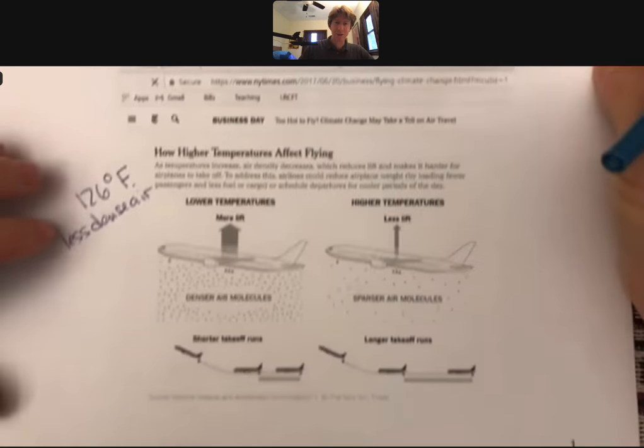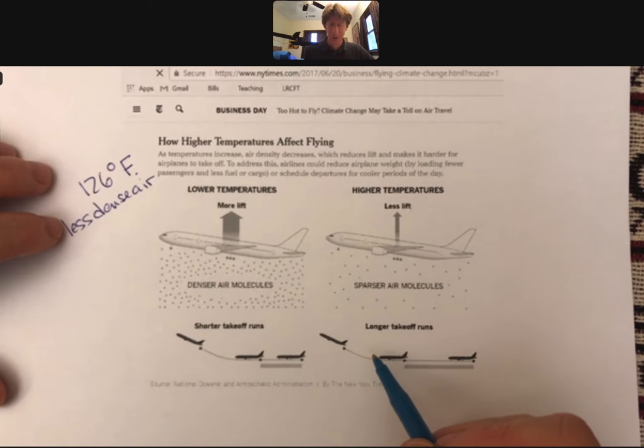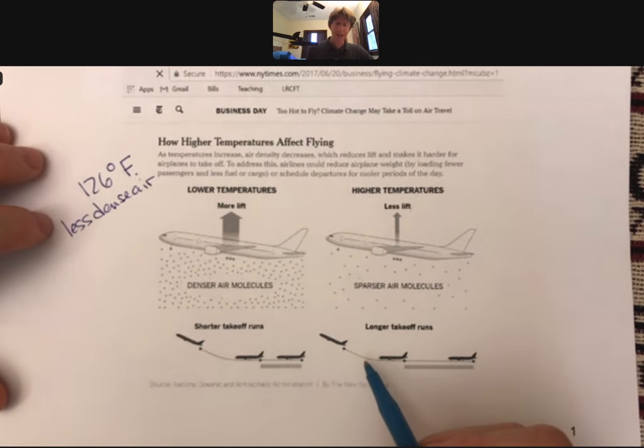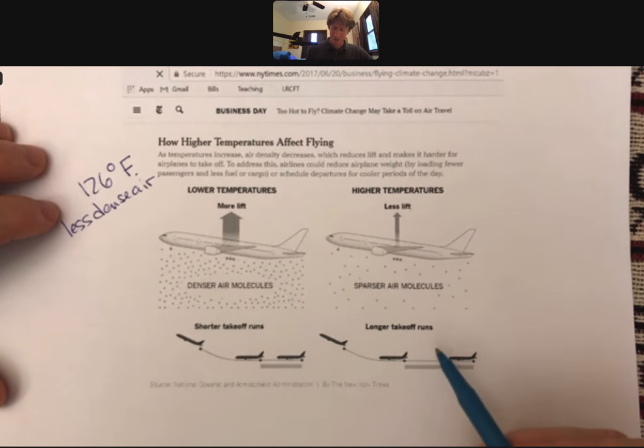And that leads to longer takeoff runs. So you need to get more speed up to get the plane off the ground. And what you might imagine is once you get up high, the air cools off anyway, so it's less of an issue.